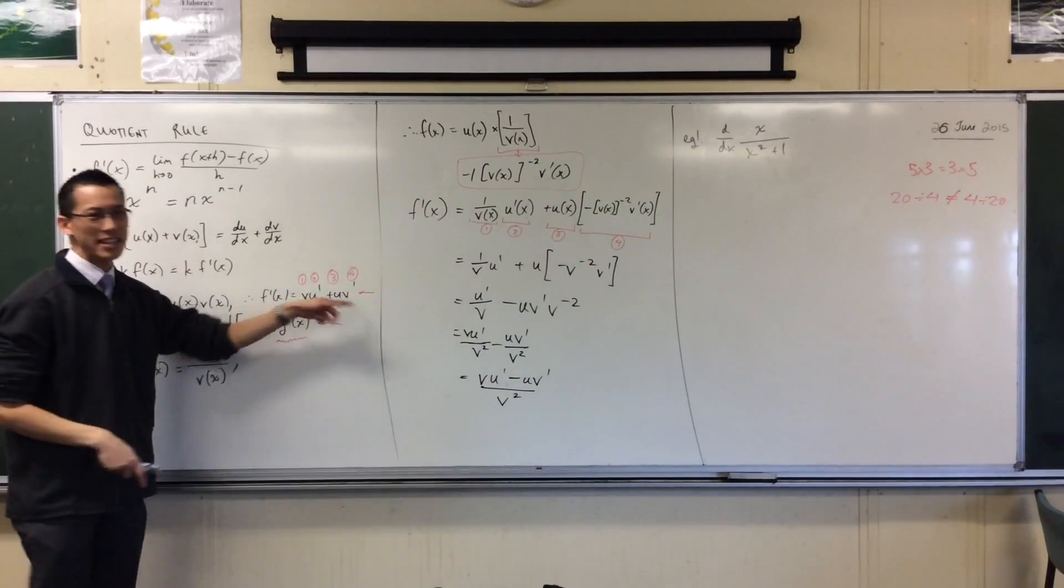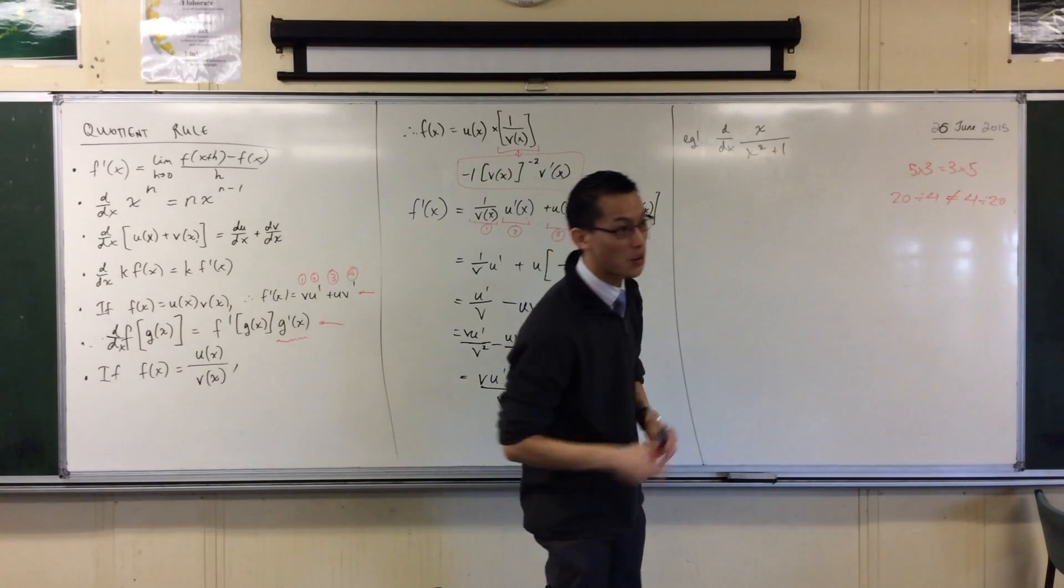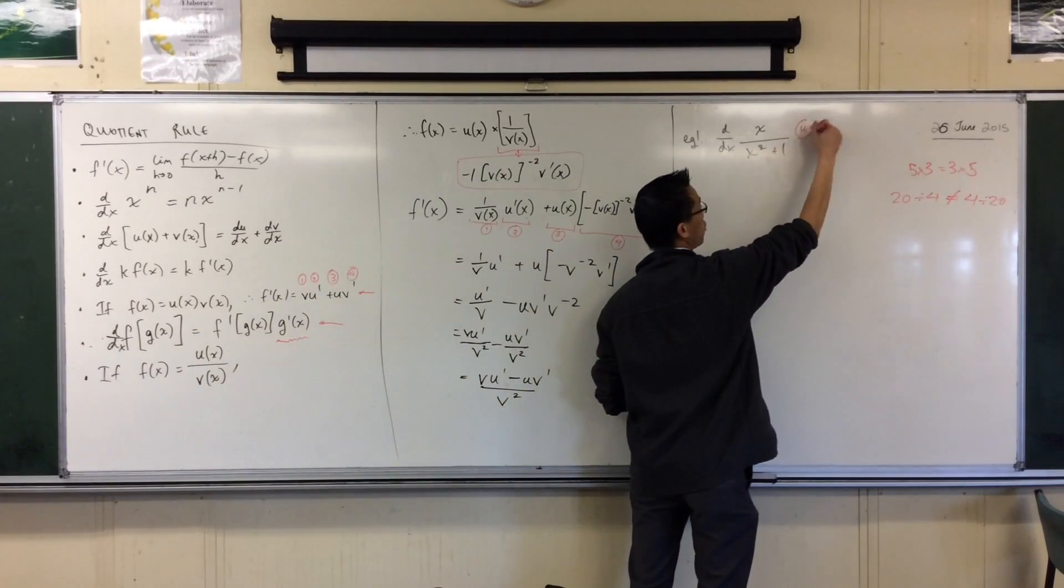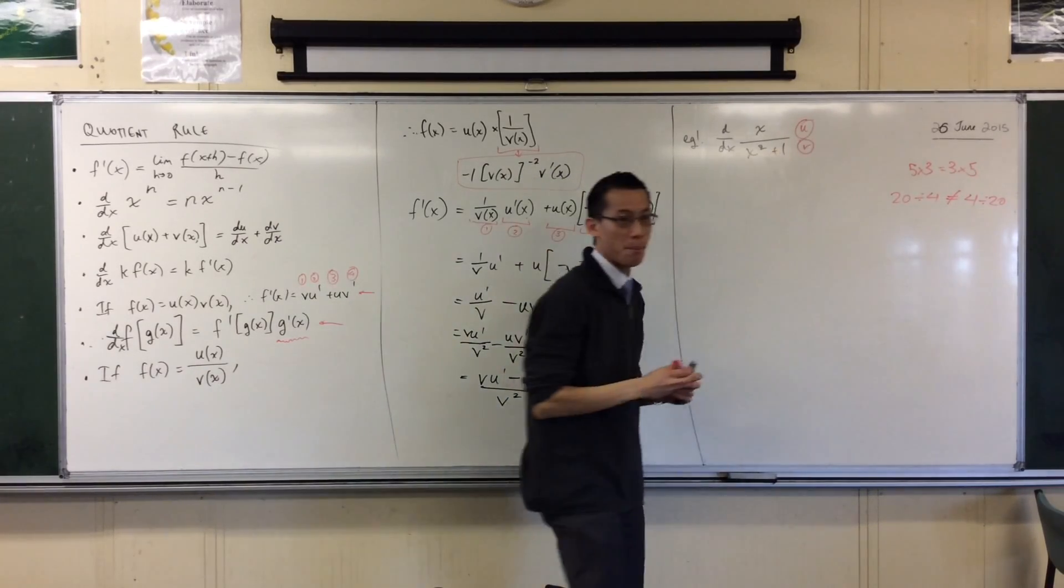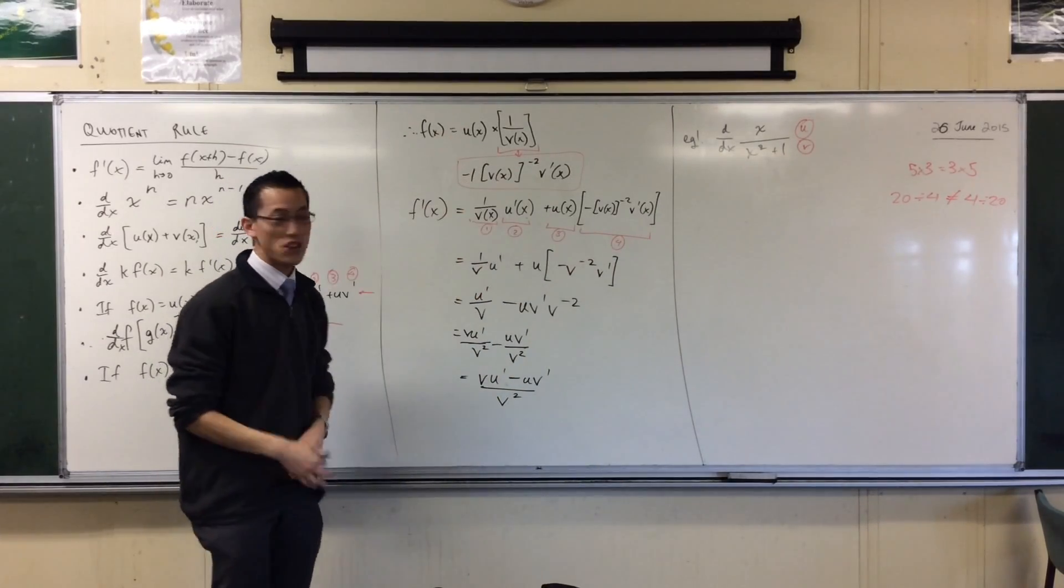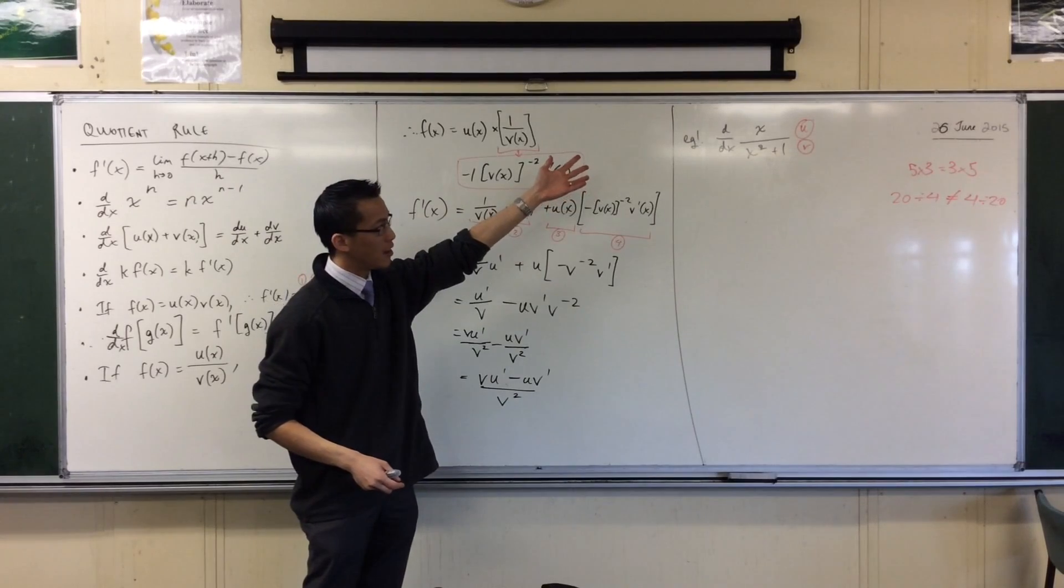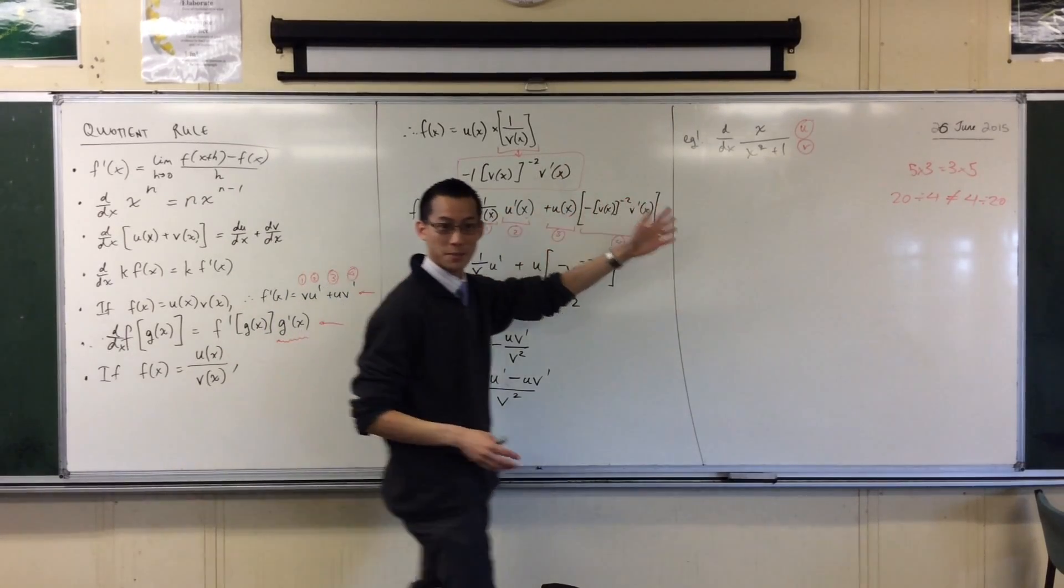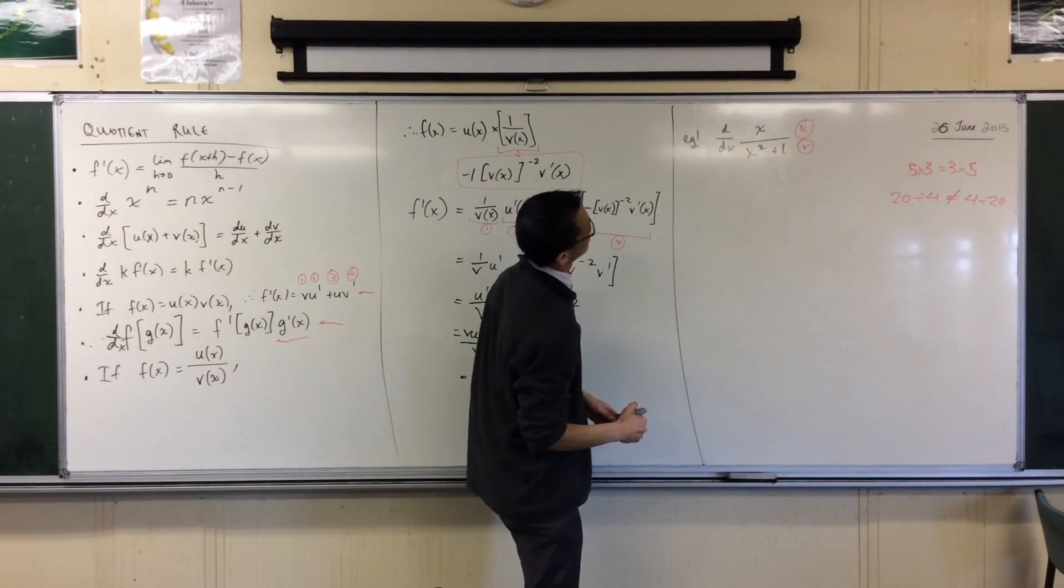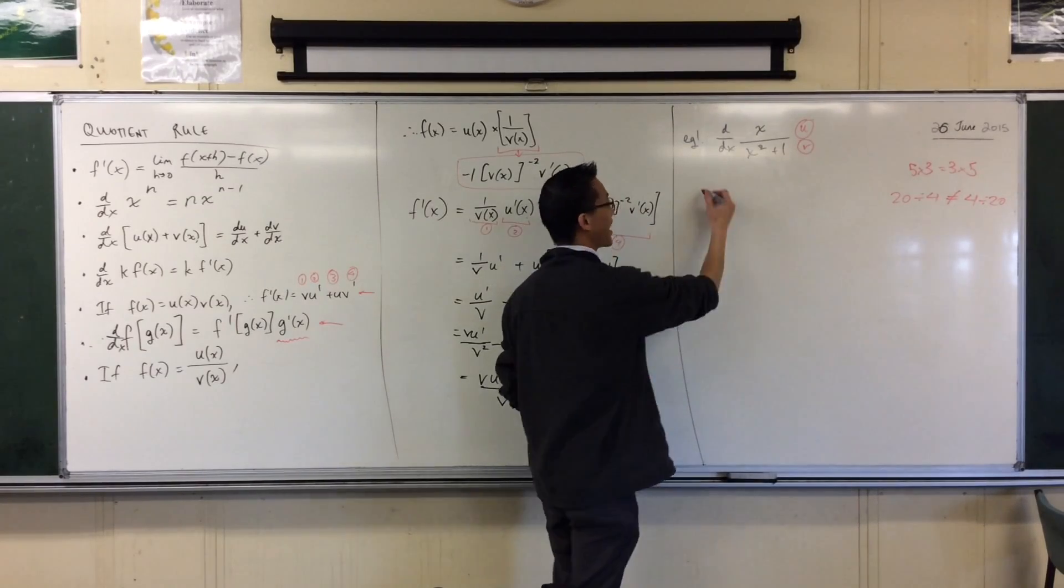So whereas here it didn't matter what was what, here it does matter. It's in alphabetical order, so that's easy. You've got U on the top and V on the bottom because that's how I started things off. U on V. So when you're labeling things so you don't confuse them, it's in alphabetical order. Watch out for those derivatives. Now let's have a go.